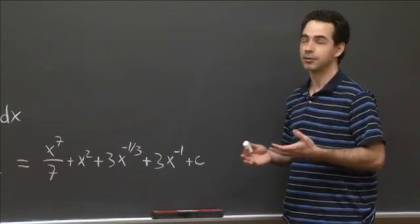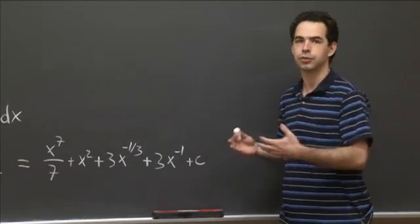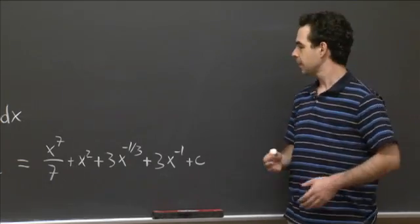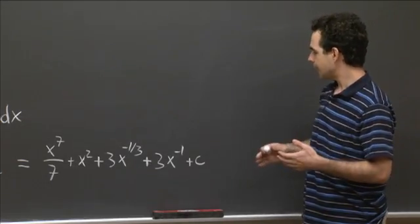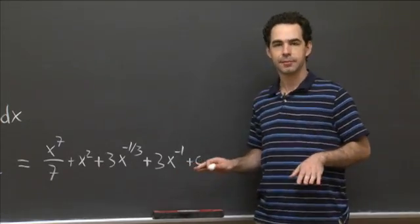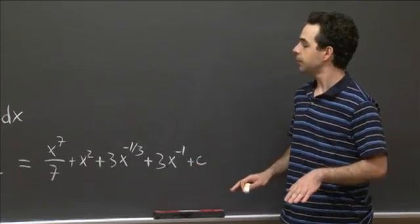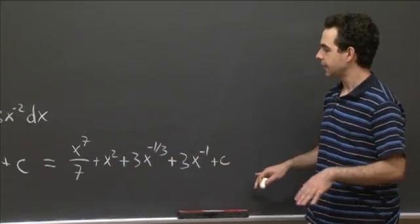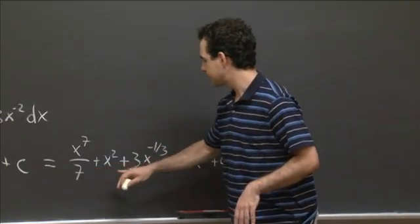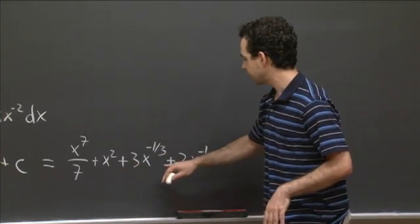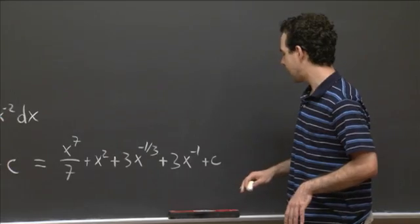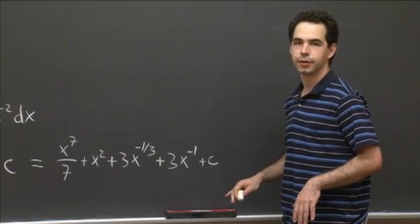you can always go back and take the derivative of the thing that you computed and check that it's equal to what you started with. So if you're ever worried that you made a mistake computing an antiderivative, one thing you can always do is take a derivative of what you've got at the end. If we take a derivative here, we get x to the 6th plus 2x minus x to the minus 4 thirds minus 3x to the minus 2.